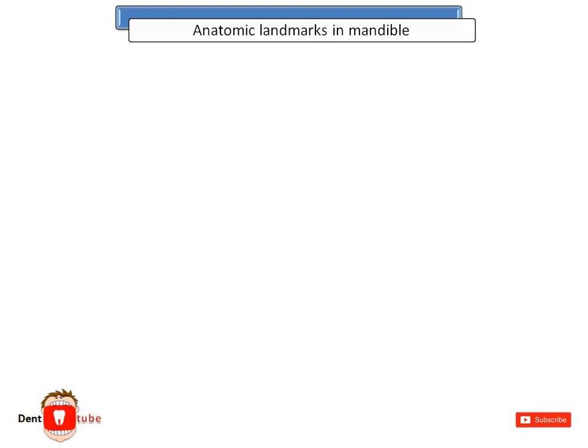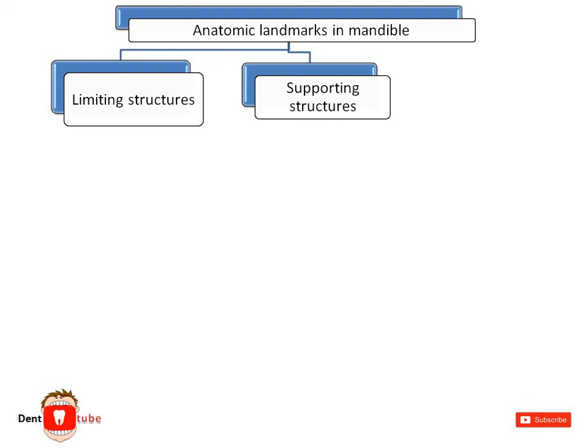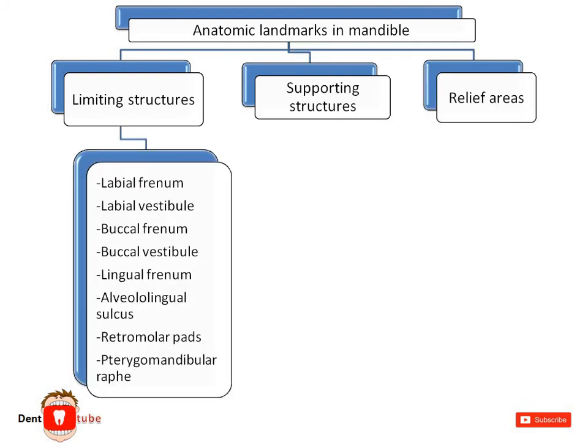Anatomic landmarks in the mandible are basically divided into limiting structures, supporting structures, and relief areas. Under limiting structures we have: labial frenum, labial vestibule, buccal frenum, buccal vestibule, lingual frenum, alveololingual sulcus, retromolar pad, and pterygomandibular raphe.